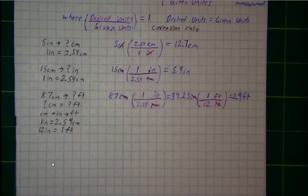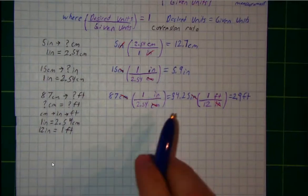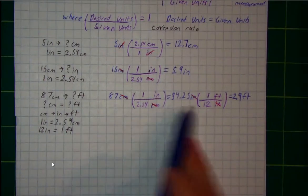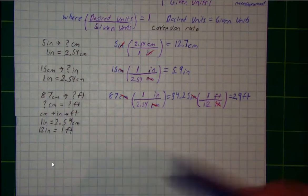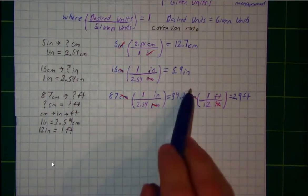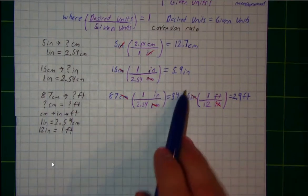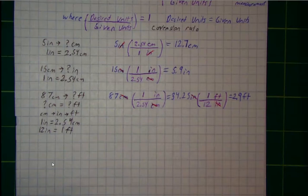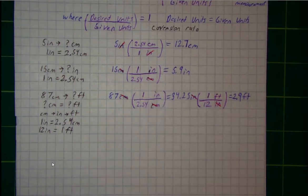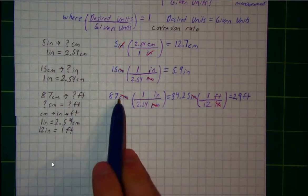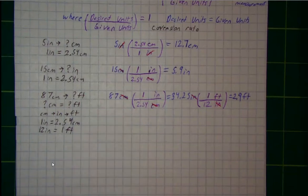What's really cool about dimensional analysis is we can actually skip the middleman. I don't have to write out the intermediate equal sign and middle number. Instead, I can just write out both conversion rates multiplied by my original given measurement all in one step. Let's try that out.